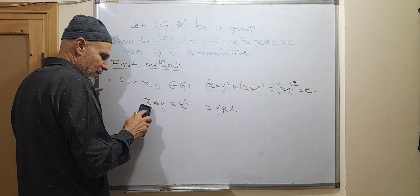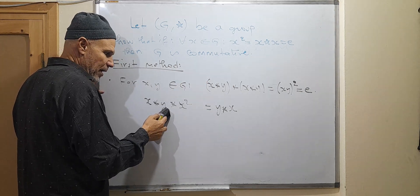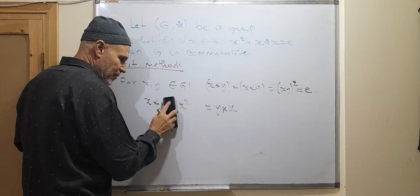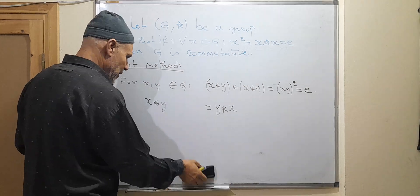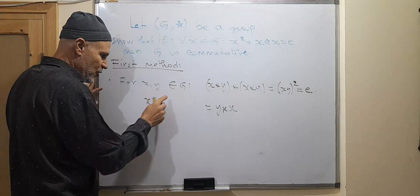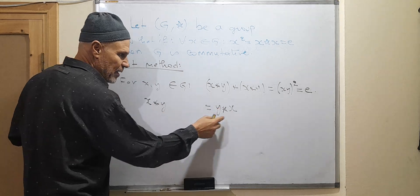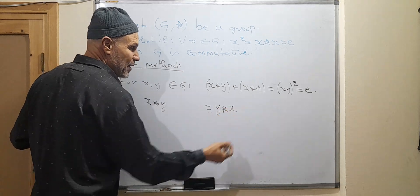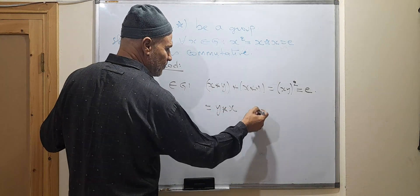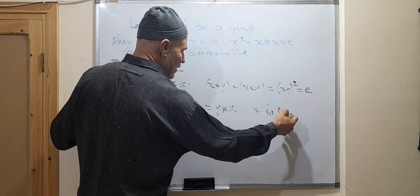Composing with x star y, we get x star y equal to y star x. Finally, for all x and y from G we have x star y equal to y star x. This means that star is commutative.